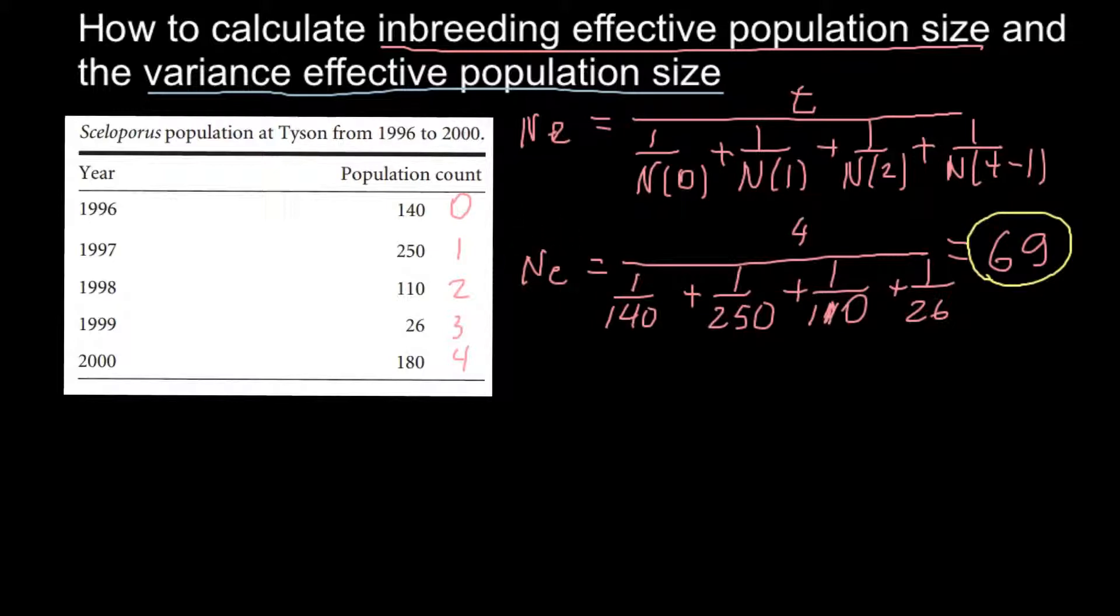Here is the second formula for the variance effective population size. I'll use a different color so it would be easier for you. So Ne here, or effective population size, would equal t, number of generations, divided by...